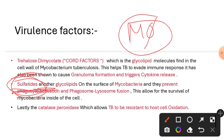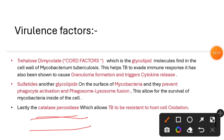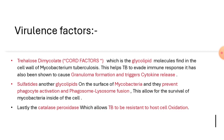Sulfatides is a glycolipid present on the surface of Mycobacterium tuberculosis. It will prevent phagocyte activation and phagosome-lysosome fusion, and ensures survival of Mycobacterium tuberculosis inside the host. The last virulence factor is catalase-peroxidase, which resists host cell oxidation.